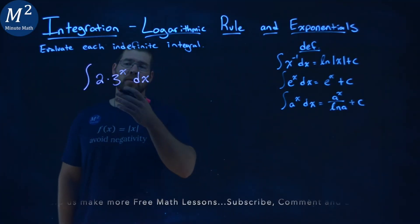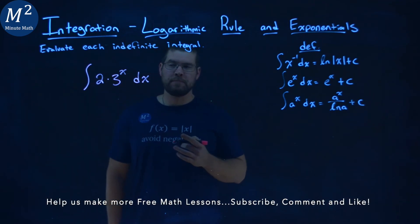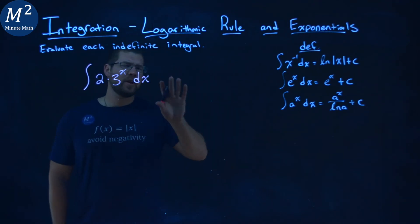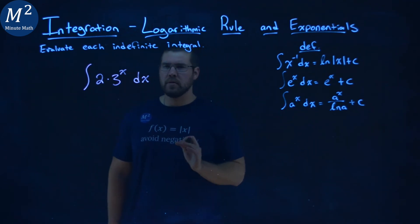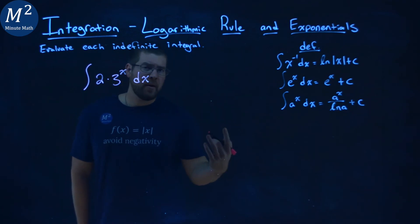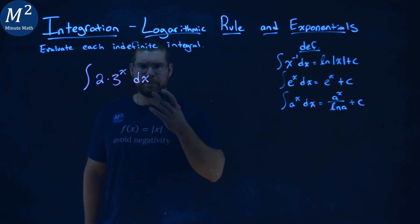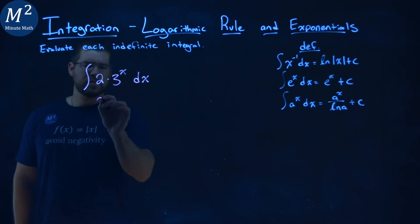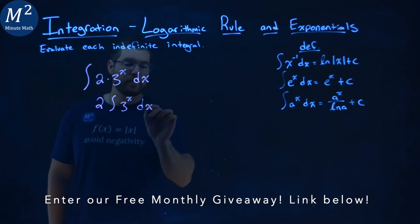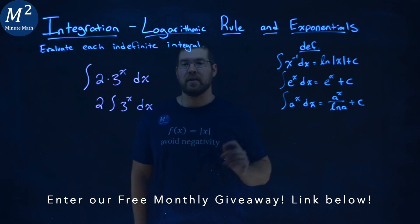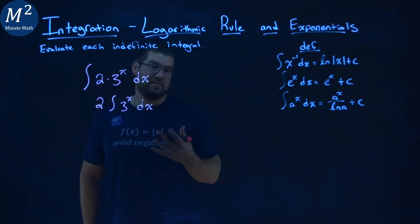We're given this problem right here: the integral of 2 times 3 to the x power dx, and we want to evaluate this indefinite integral. First, I want to see if I can make this look like one of my definitions — the third one looks like it matches up pretty closely, but that 2 is a problem. I'm allowed to pull that 2 outside of the integral because there's multiplication going on there. So I pull out the constant 2, and I have the integral now of 3 to the x power dx. This looks just like our a to the x power, so we're going to use our definition to solve this.